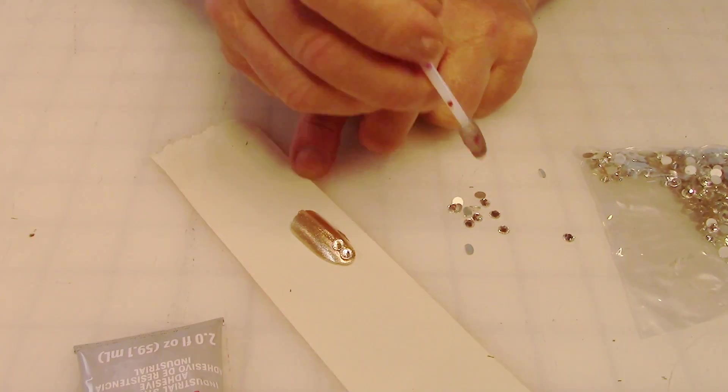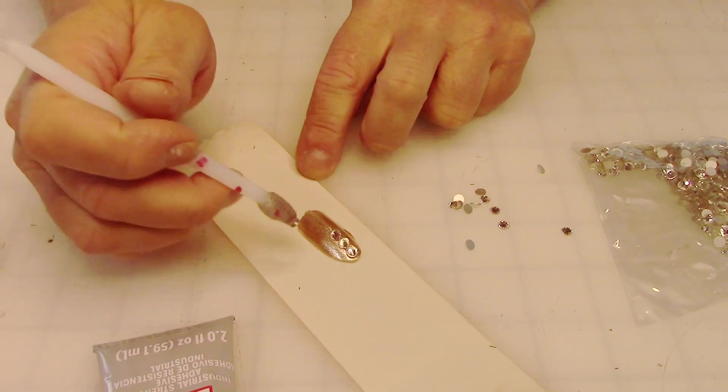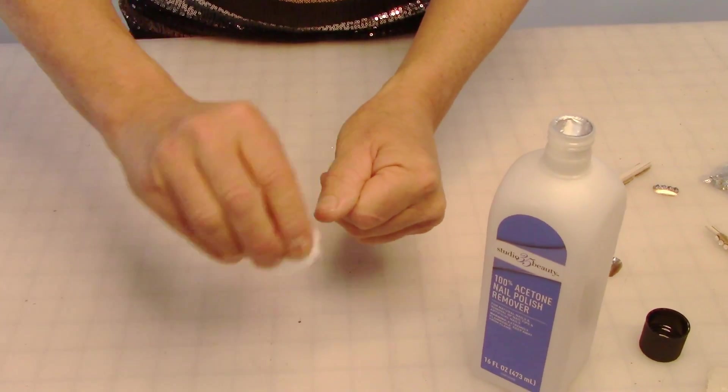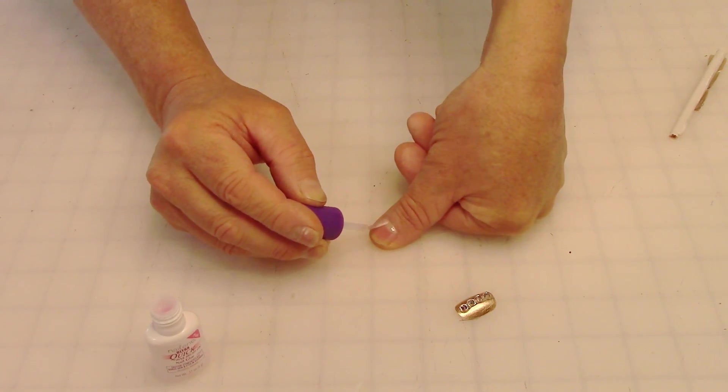Now if you're going to use false nails, you want them to stay on during a show. One way to do that is to start by using nail polish remover. We're just going to take a cotton ball and wipe over our fingernails because you want to make sure there's no oil or debris off your fingernail that would stop the nail glue from sticking.